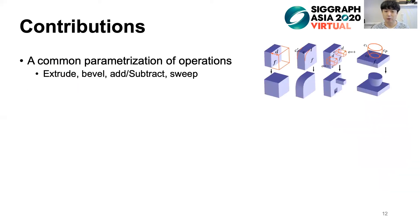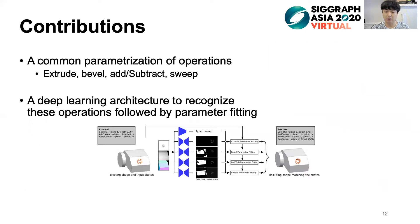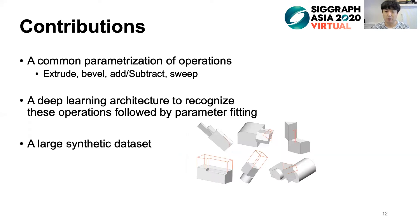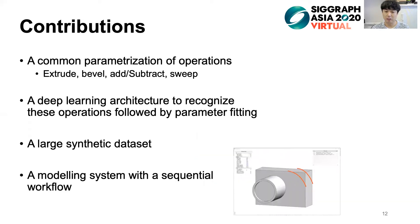In total, we propose the following four technical contributions. We first propose a common parameterization of popular sketching and CAD modeling operations — we choose extrude, bevel, add, subtract, and sweep as examples to illustrate the effectiveness. We then develop a deep learning architecture to recognize these operations, taking context into account to handle arbitrary order of operations and performing stroke segmentation followed by a fitting process to handle varying numbers of parameters. To train the network, we design a large dataset of synthetic CAD models along with their step-by-step construction sequences. Finally, we present Sketch2CAD, a novel sketch-based system that unifies the sequential workflow of design sketching and CAD modeling.